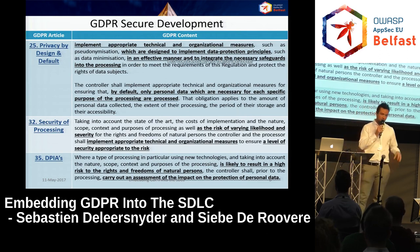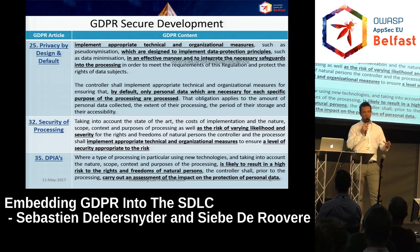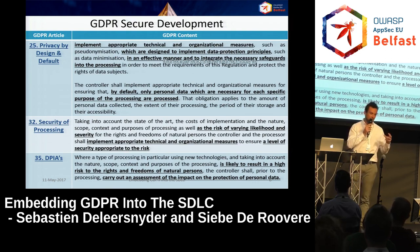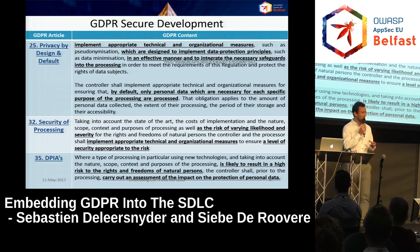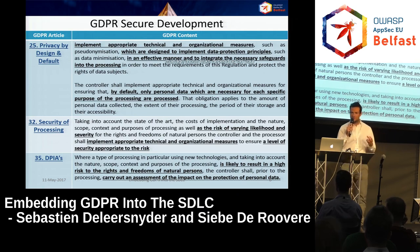Three GDPR articles go deeper into confidentiality, building further upon that principle. In every article, one principle comes back: you need to be able to identify security risks. In your software development process, you need to start with identifying security risks and then build security controls to provide adequate technical and organizational measures to manage those risks, depending on your organization's risk appetite.